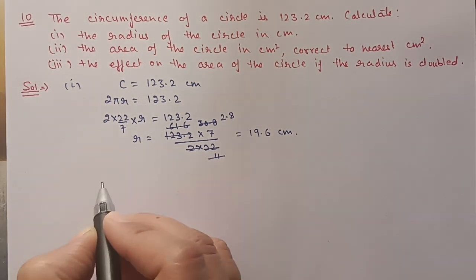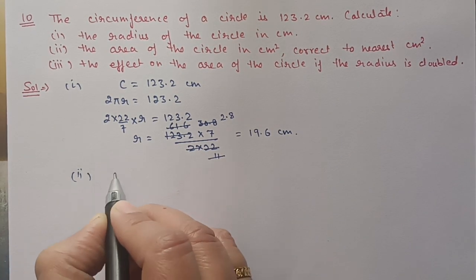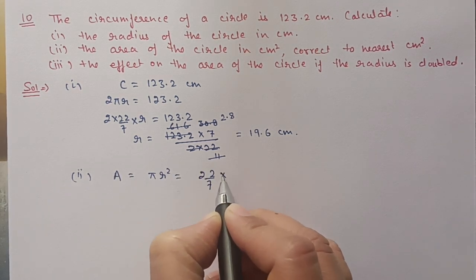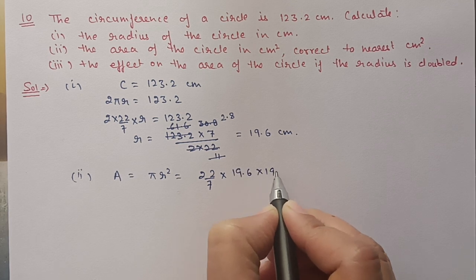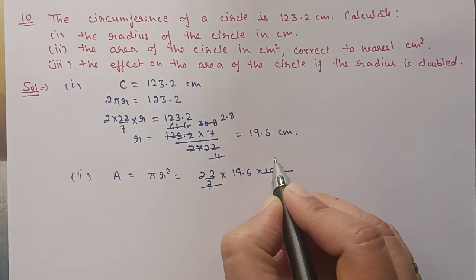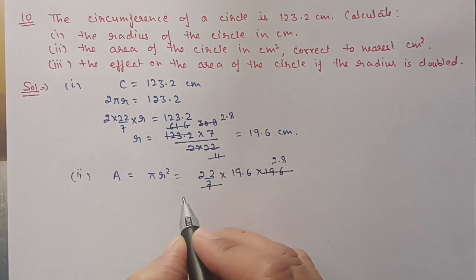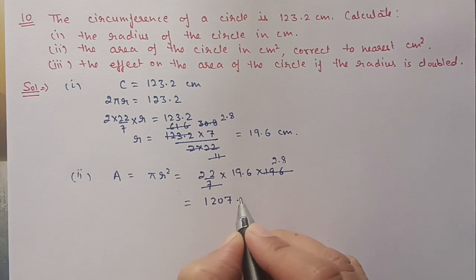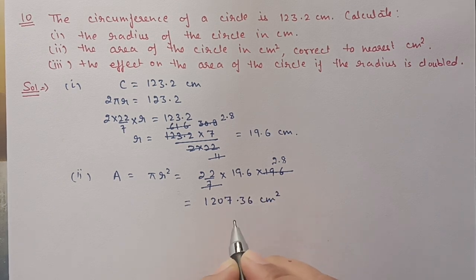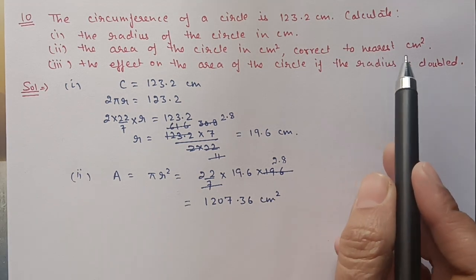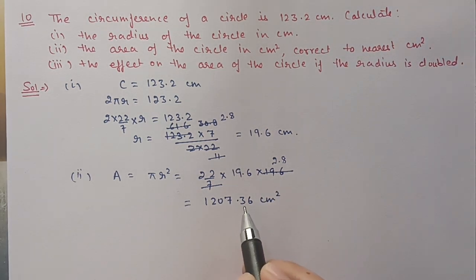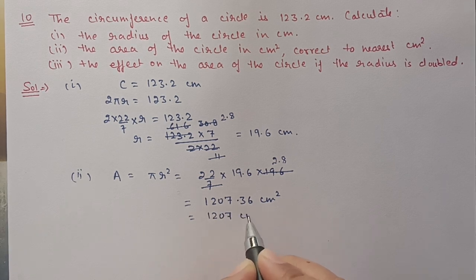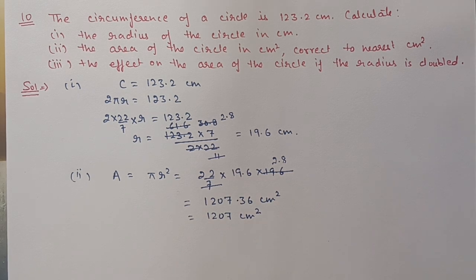For the second part, we find the area. Area = πr² = (22/7) × 19.6 × 19.6. Canceling 19.6 with 7 gives 2.8, and after multiplication we get 1207.36 centimeters squared. To the nearest centimeter squared, since the digit after the decimal is 3 (less than 5), we round down to 1207 centimeters squared.